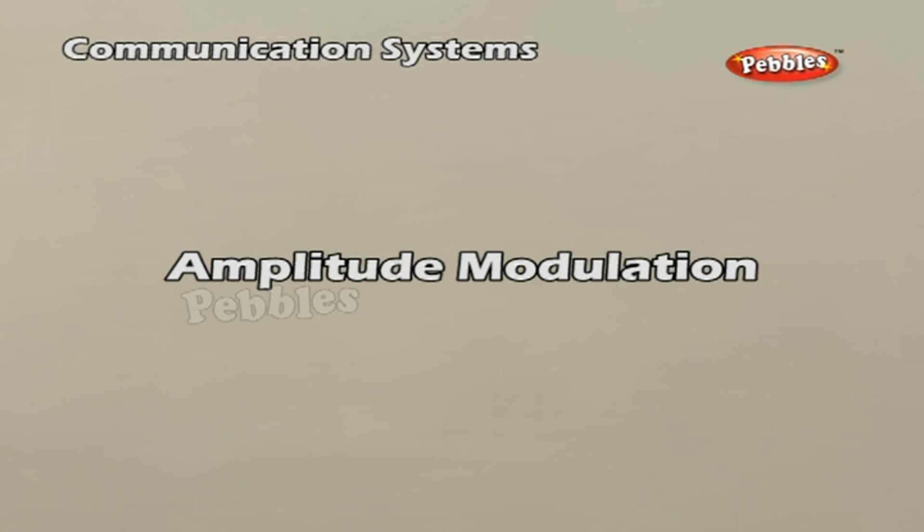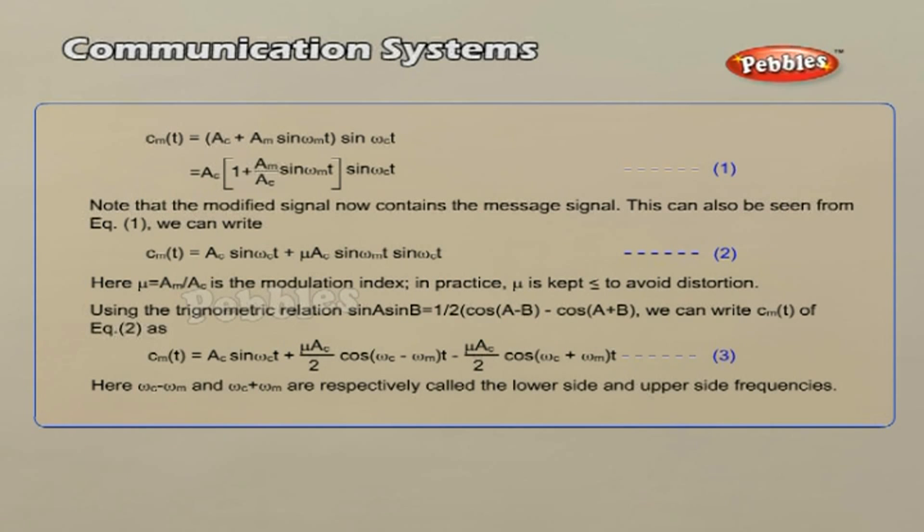Amplitude modulation. In amplitude modulation, the amplitude of the carrier is varied in accordance with the information signal. Here we explain amplitude modulation process using a sinusoidal signal as the modulating signal. Let c(t) = Ac sin(ωc t) represent carrier wave.